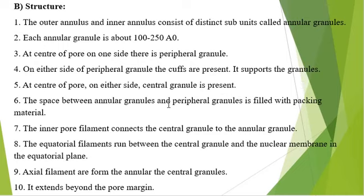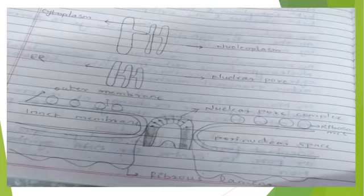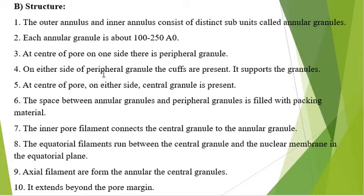At the center of the pore, on either side, the central granule is present. The space between the annular granules and peripheral granules is filled with packing material. The annular granules are present at the center with a dimension of 100 to 250 angstrom units, and on the other side, peripheral granules are present.